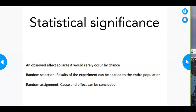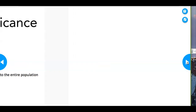The observed effect is so large that it would not occur by chance — that's what we need for statistical significance. If results are very similar between groups, they are not statistically significant. If randomly selecting people, we can apply results to the entire population; if randomly assigning, we can conclude cause and effect.